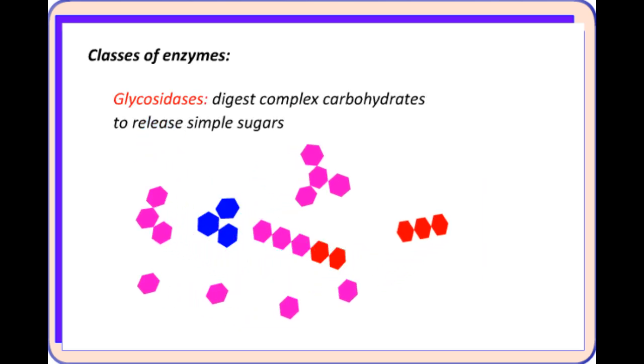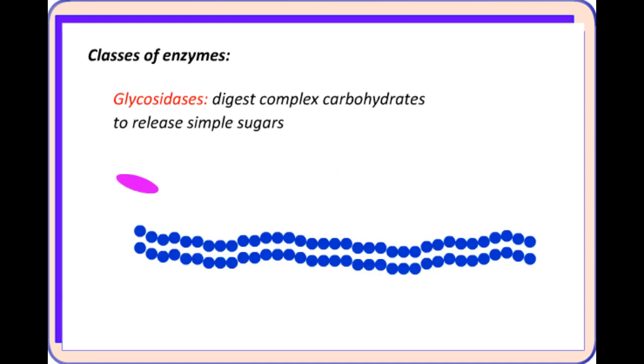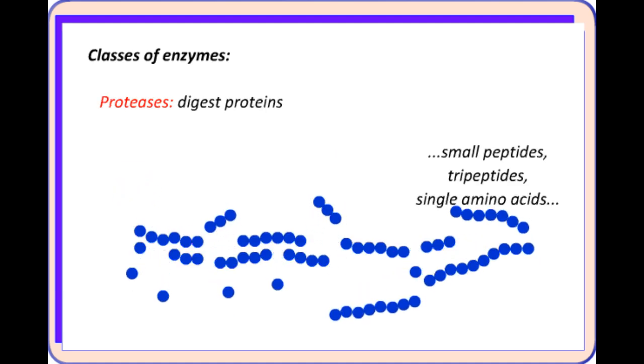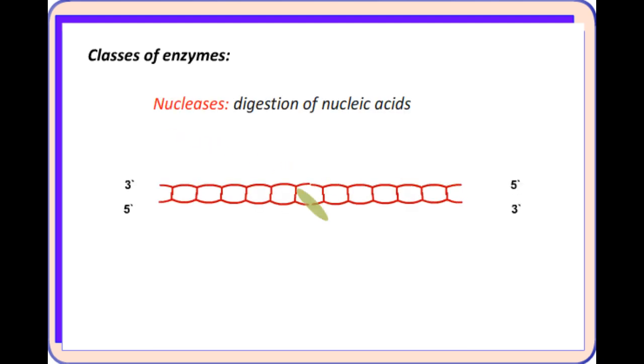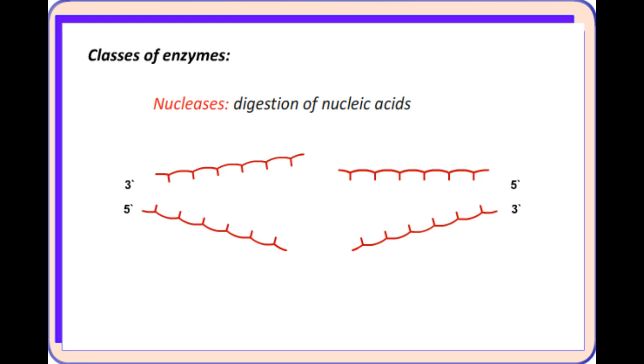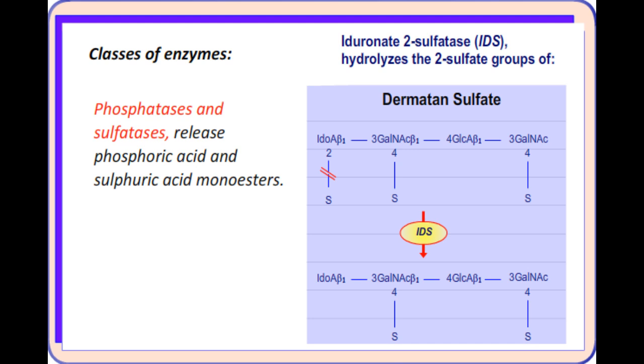The glycosylases digest complex carbohydrates to release simple sugars and the proteases digest proteins to produce small peptides and single amino acids. The nucleases are involved with the digestion of nucleic acids. Phosphatases and sulfatases release phosphoric acid and sulfuric acid monoesters.